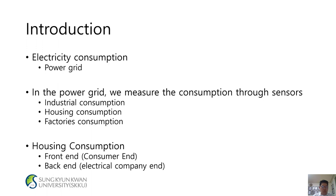Introduction: Electricity consumption in the power grid is measured through sensors, covering industrial consumption, housing consumption, and factory consumption. The system operates across multiple ends: front-end, consumer-end, back-end, and electrical company-end.